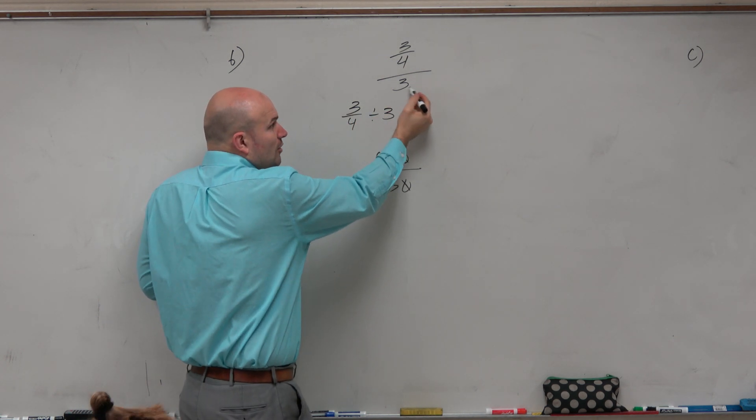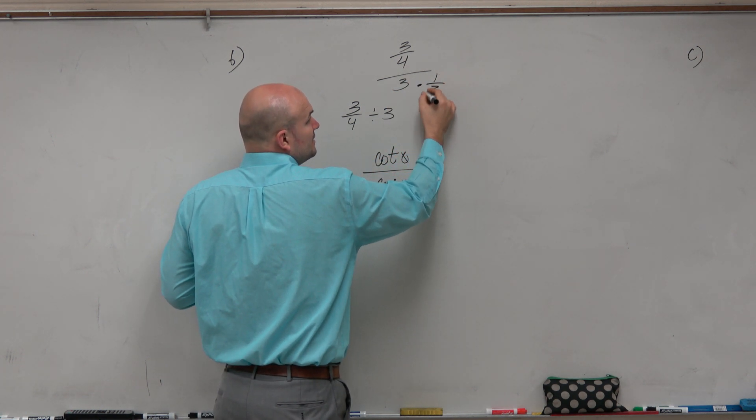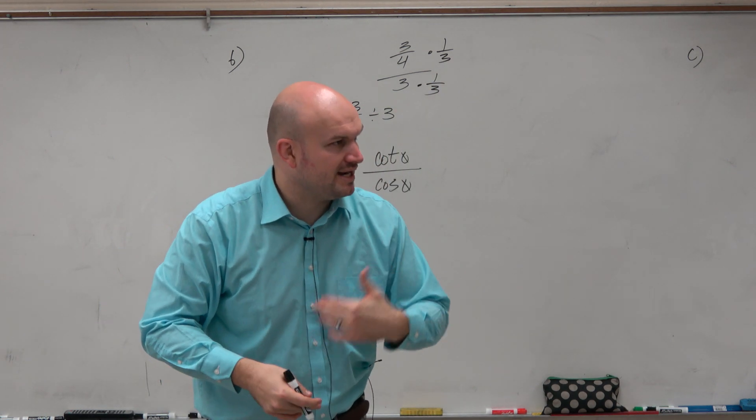Well, again, guys, remember, all we want to do is get rid of this fraction out here. So we multiply by the reciprocal. Divided by a number is the same thing as multiplying by its reciprocal.